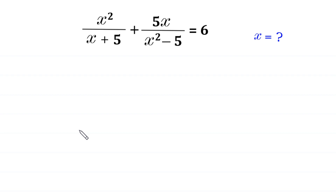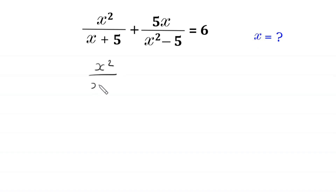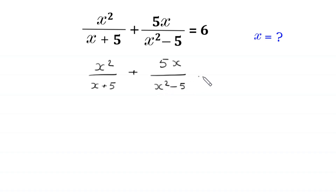Hello, welcome to how to solve this very nice algebra equation: x squared over x plus 5, plus 5 times x over x squared minus 5, is equal to 6. We need to find all possible values of x. Let's start: x squared divided by x plus 5, plus 5 times x divided by x squared minus 5 is equal to 6.